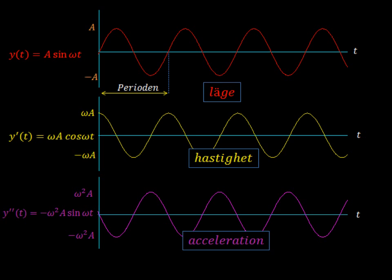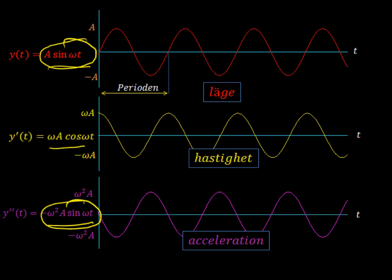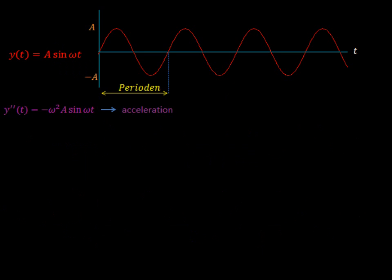In part one we covered the position, the velocity, and the acceleration. We're going to be taking the red one — the position and the acceleration — and combining this with Hooke's Law and our good old friend F equals MA to see if we can work out the large T, the period.